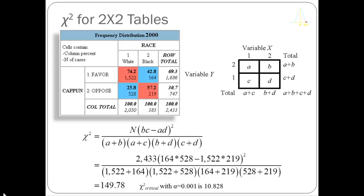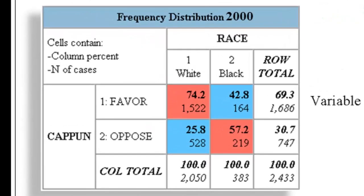One last thing to look at: if you have a two-by-two table it's often easier to use a shortcut formula. Here I've taken the example of capital punishment — whether you believe in it or don't — and I'm looking at the relationship with race. Race is coded as white and black; capital punishment is coded as favoring or opposing, so the intersection of those two measures is a two-by-two table. My independent variable is race and my dependent variable is capital punishment. We can see a very large difference in attitudes about capital punishment: 74 percent of white respondents favor capital punishment compared to 43 percent of black respondents.